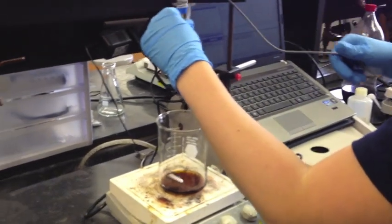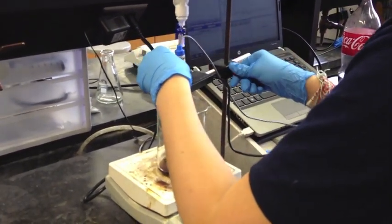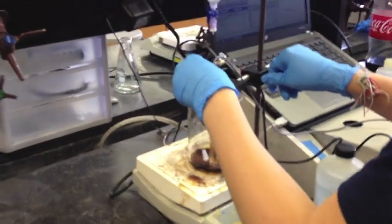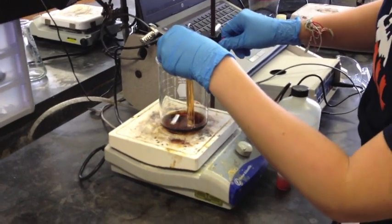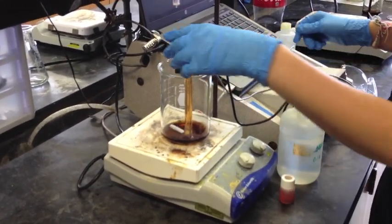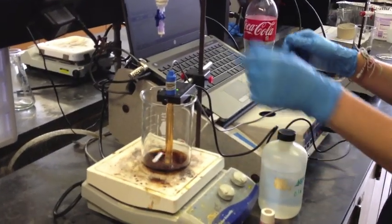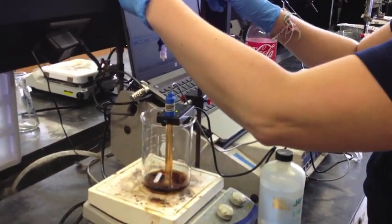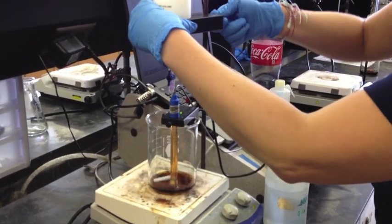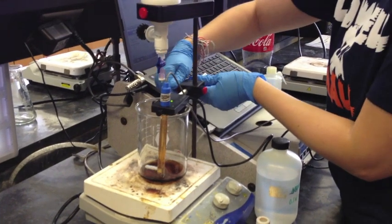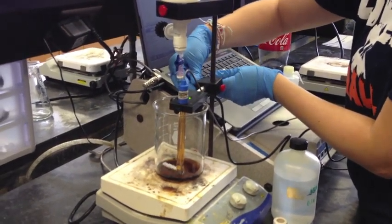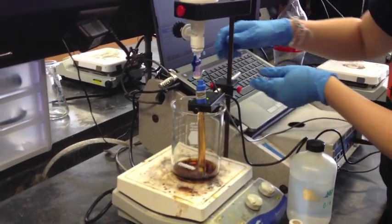Insert the pH probe into the drop counter. Lower the drop counter until the pH probe is in the Coke solution. If you're not sure if it's actually touching the liquid or not, you may want to look at the Microlab system to see if the pH probe is picking up a reading. Then position the dropper so that every drop of base falls through the drop counter and is recorded through the Microlab system. This way you can know how many drops of base you added to the Coke solution.